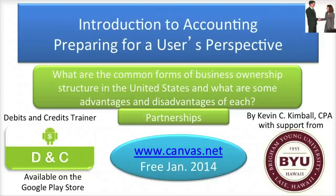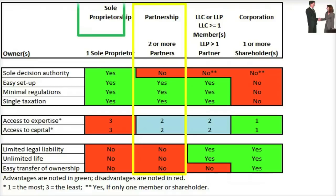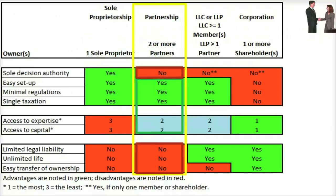Welcome to Introduction to Accounting for a User's Perspective. What are the common forms of ownership structure in the United States and what are some advantages and disadvantages of each? Partnerships. The following discussion will focus on the key characteristics and the advantages and disadvantages of partnerships.